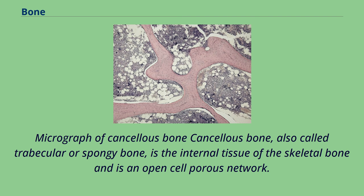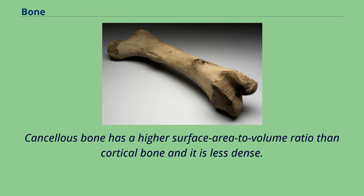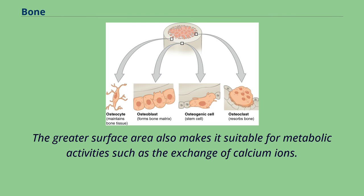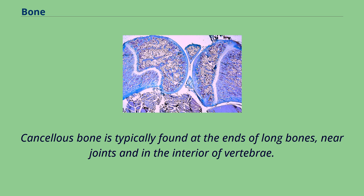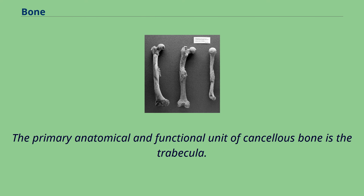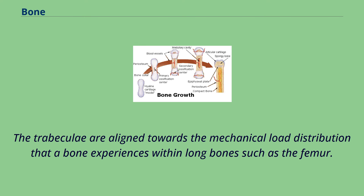Cancellous bone, also called trabecular or spongy bone, is the internal tissue of the skeletal bone and is an open-cell porous network. Cancellous bone has a higher surface area to volume ratio than cortical bone and is less dense, making it weaker and more flexible. The greater surface area makes it suitable for metabolic activities such as the exchange of calcium ions. Cancellous bone is typically found at the ends of long bones, near joints and in the interior of vertebrae. It is highly vascular and often contains red bone marrow where hematopoiesis, the production of blood cells, occurs.